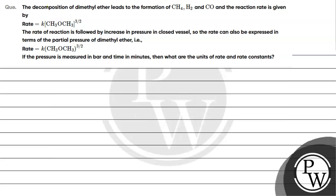The question says: decomposition of dimethyl ether leads to the formation of methane, hydrogen and carbon monoxide. The rate of reaction is followed by increase in pressure in a closed vessel, so the rate can also be expressed in terms of partial pressure of dimethyl ether. The rate equals K times P^(3/2). If pressure is measured in bars and time in minutes, what are the units of rate and rate constant?